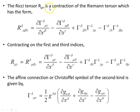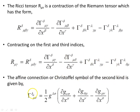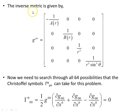The Ricci tensor is a contraction of the Riemann tensor, which takes this form. Contracting on the first and third indices gives us the Ricci tensor expression. The affine connection, or Christoffel symbol of the second kind, is given by this object. For the inverse metric — given a diagonal metric — it is just the reciprocal of each of the terms along the diagonal.